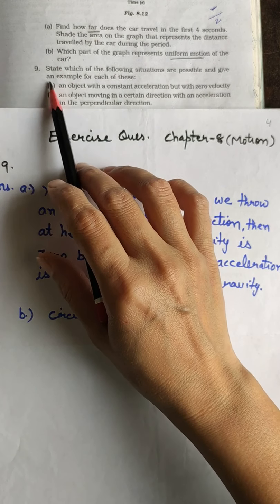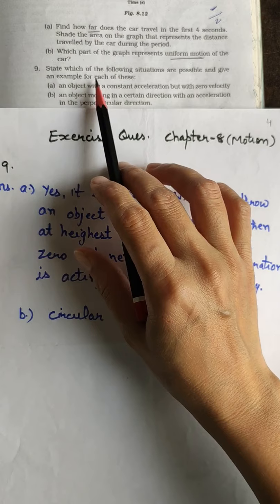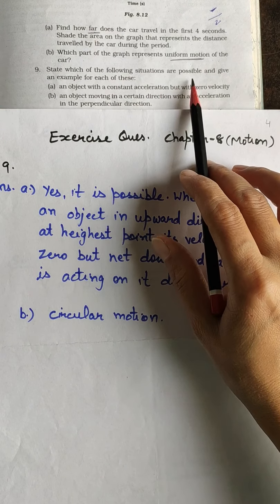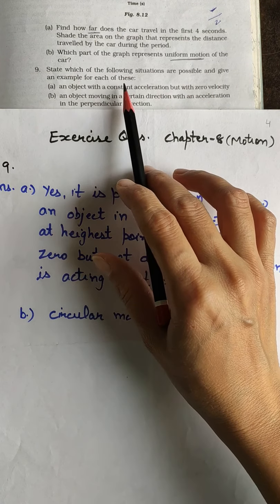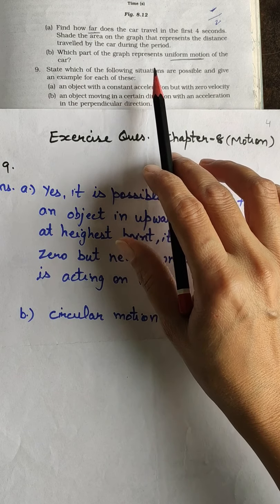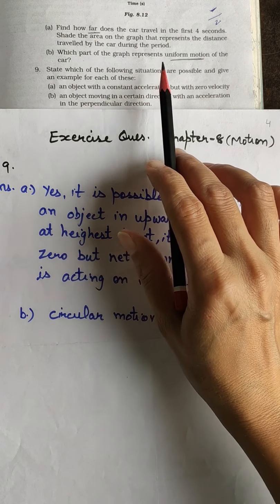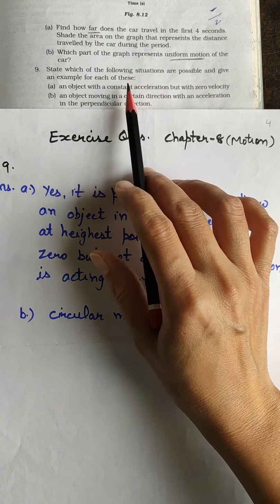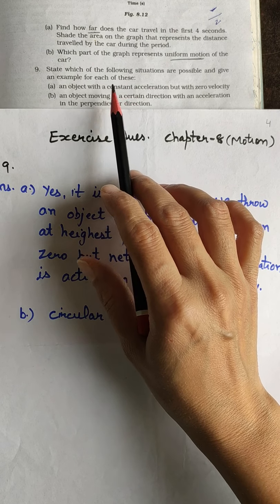Let us discuss question number 9 of exercise. State which of the following situations are possible and give an example for each of these. First of all, we have to tell whether the situation is possible or not and then we have to tell the example if yes.